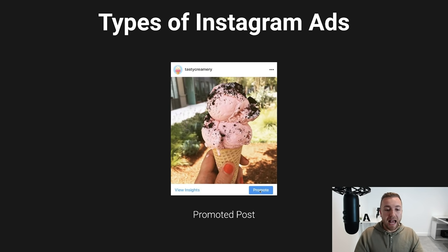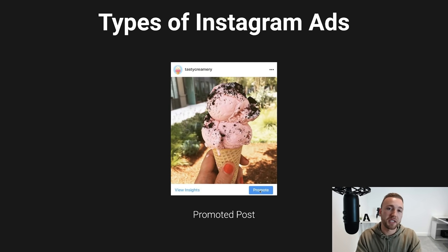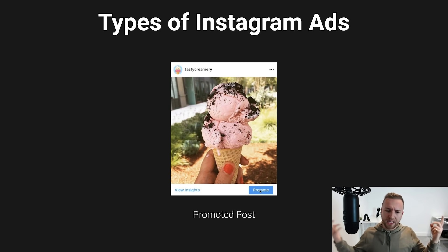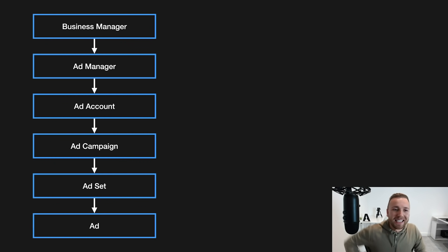There's a 'Promote' button at the bottom of every post on your profile, but you need to ensure your profile is a business account. You'll probably reach between 2,000 and 5,000 people if you spend £5–£10, depending on the audience you target. The targeting options on the Instagram Promote feature are dumbed down, making it less effective for selling products, but it is good for getting some extra engagement on posts without buying fake likes.